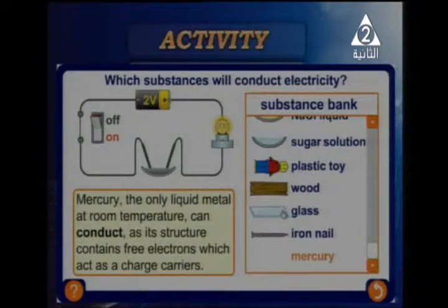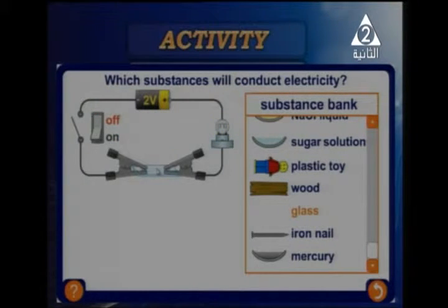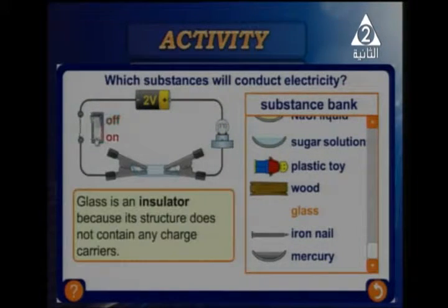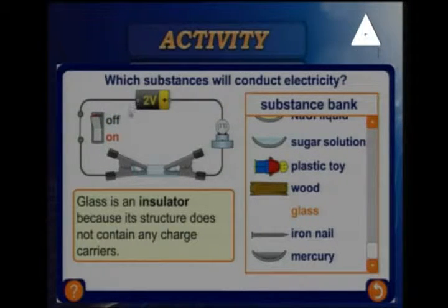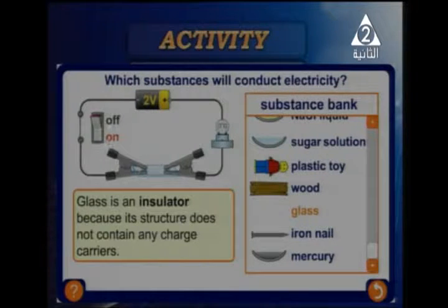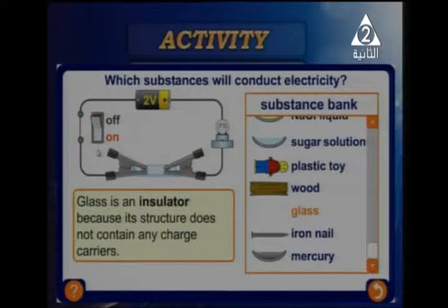Now if I replace mercury with glass — the electric circuit consists of a battery, a lamp, a connection part, and a key. The key means on and off, to close or open the electric circuit.